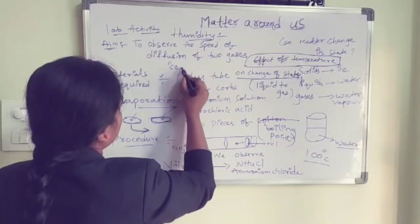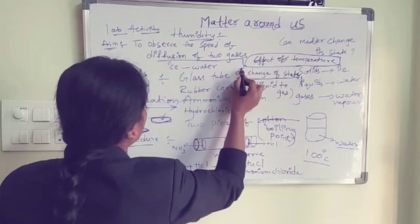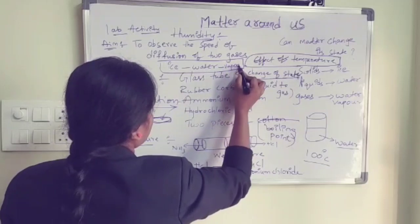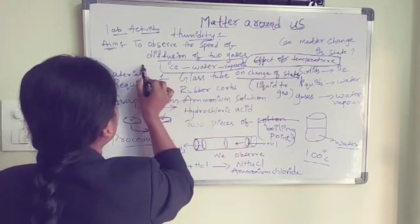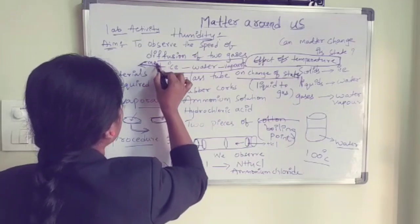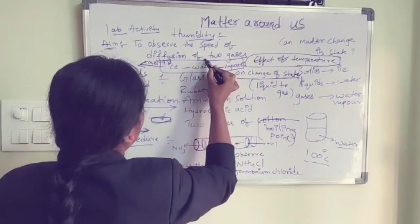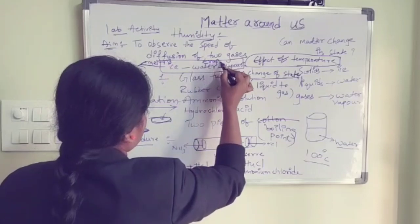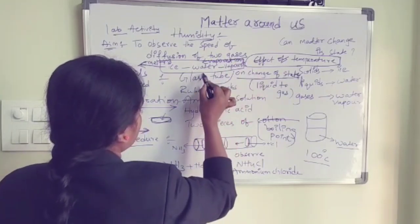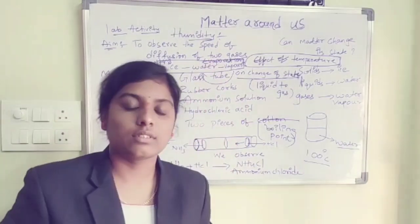To summarize: ice, water, and vapor represent the states of matter. The processes involved are melting and evaporation. Thank you.